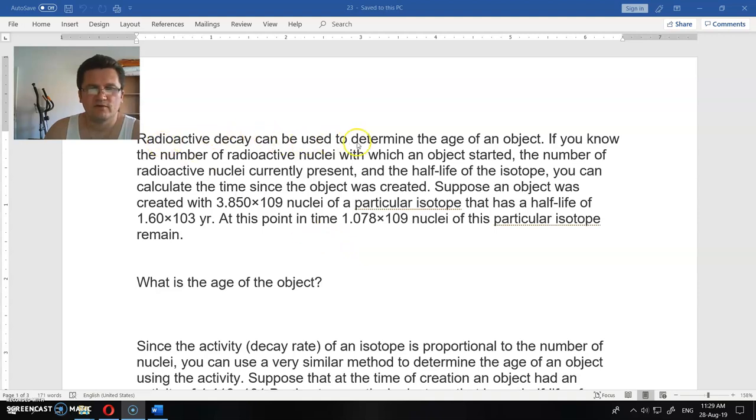Radioactive decay can be used to determine the age of an object. If you know the number of radioactive nuclei with which an object started, the number of radioactive nuclei currently present, and the half-life of the isotope, you can calculate the time since the object was created.